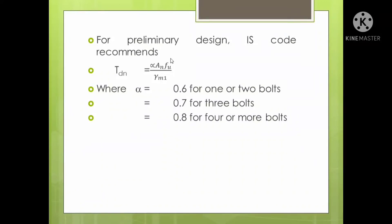AN is the net area, FU is the ultimate stress, and γM1 is the partial safety factor. These are standard values available in IS code. Substituting the appropriate alpha based on number of bolts, you can evaluate the preliminary tension carrying capacity of the section.